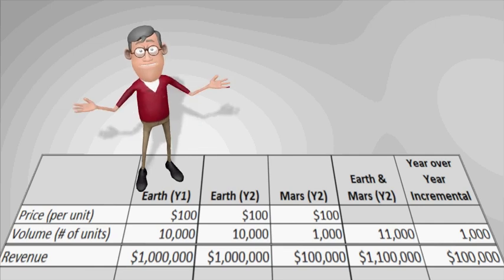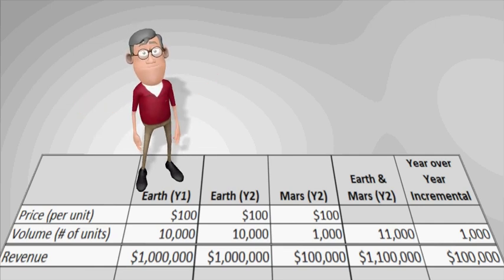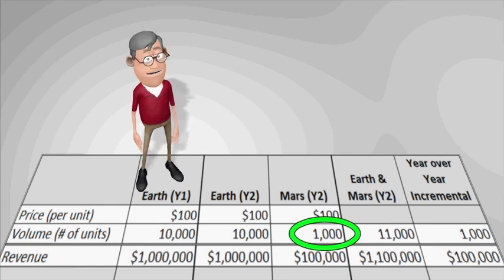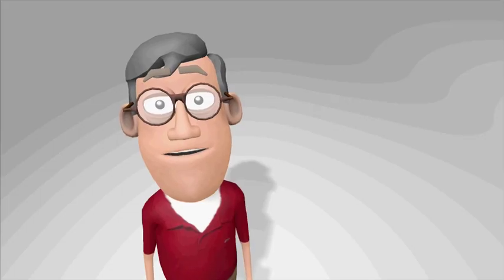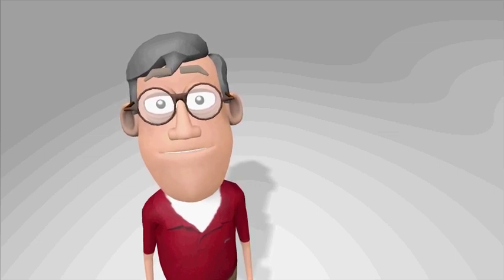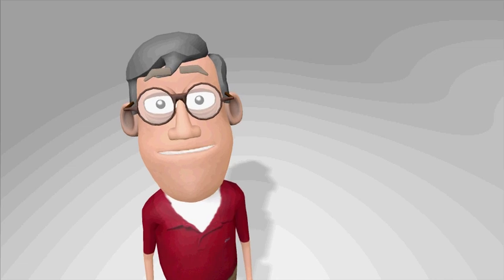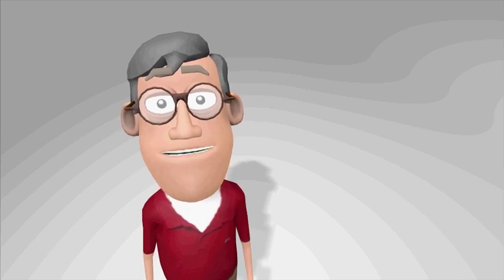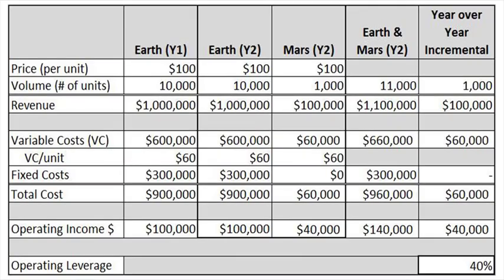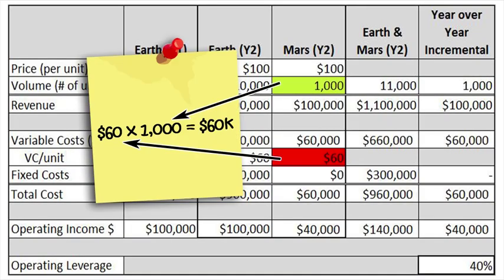With manufacturing ready, the sales team works with the Martians and forecasts initial sales of 1,000 units on Mars, well within the new production capacity. Now, let's think for a moment. Based upon what we have previously reviewed, what are all of the components needed to help us calculate operating leverage? And, do we have all of these components?